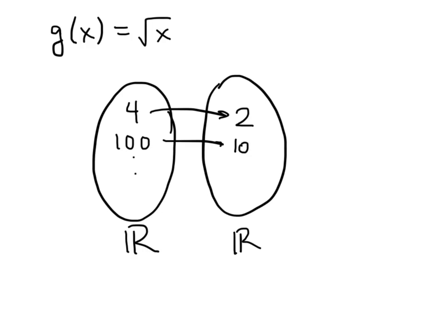But if we try to plug in something like negative 9, negative 9 doesn't have an arrow coming out of it, because the square root of negative 9 is not defined — you can't take the square root of a negative number and get a real answer. So this isn't a function.